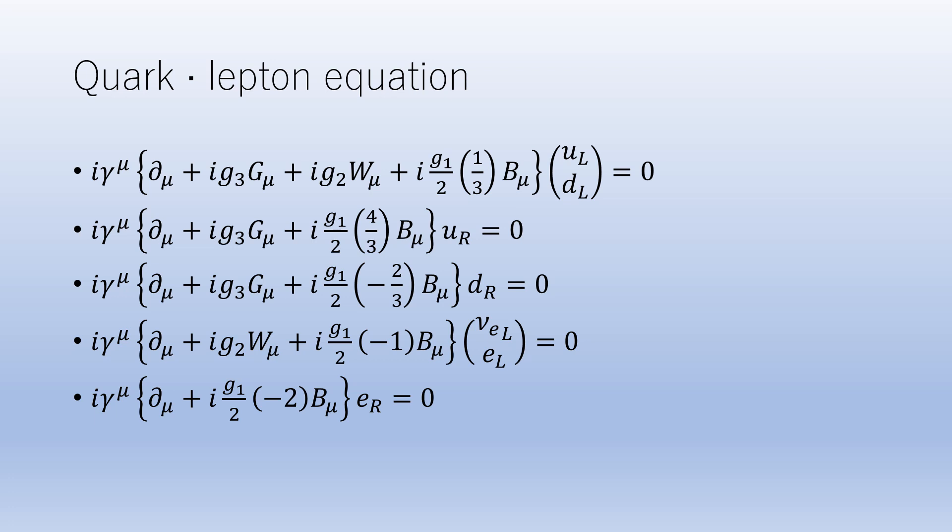The U(1)_Y gauge field B binds to each quark and lepton in proportion to the magnitude of the U(1)_Y charge Y. Since W and B are bonded differently between left-handed and right-handed quarks and leptons, it can be seen that they break the spatial inversion invariance. This is the origin of parity violations.